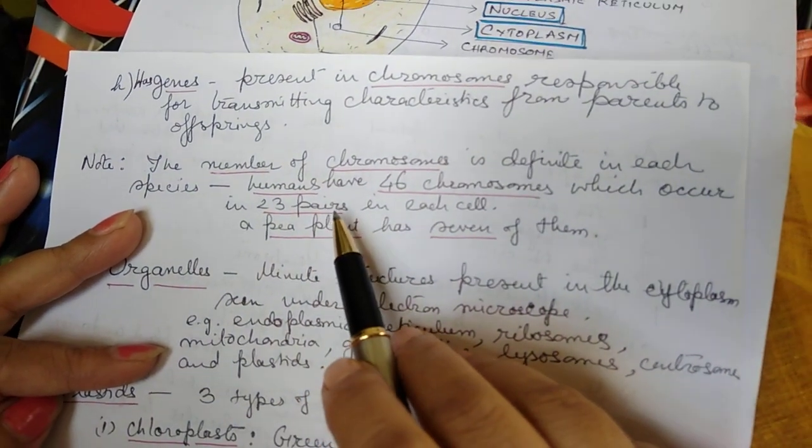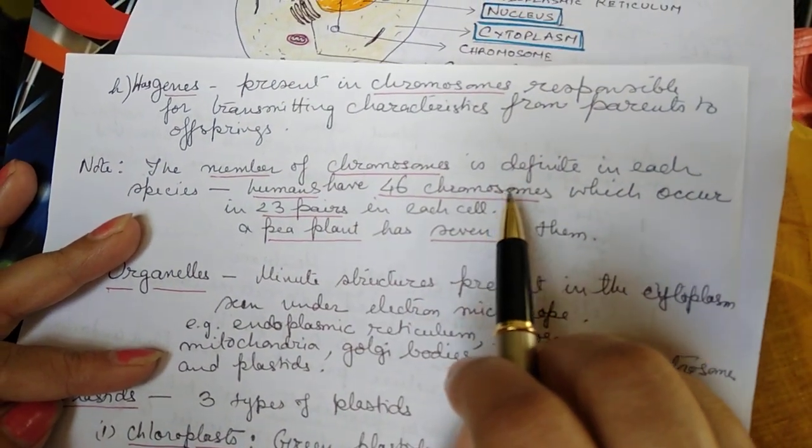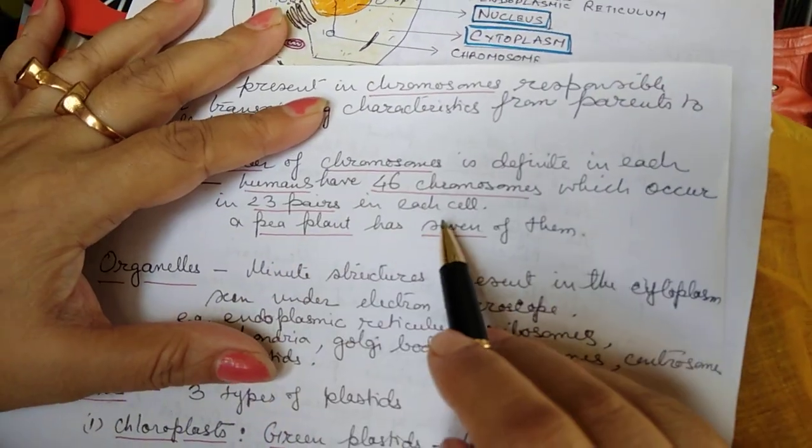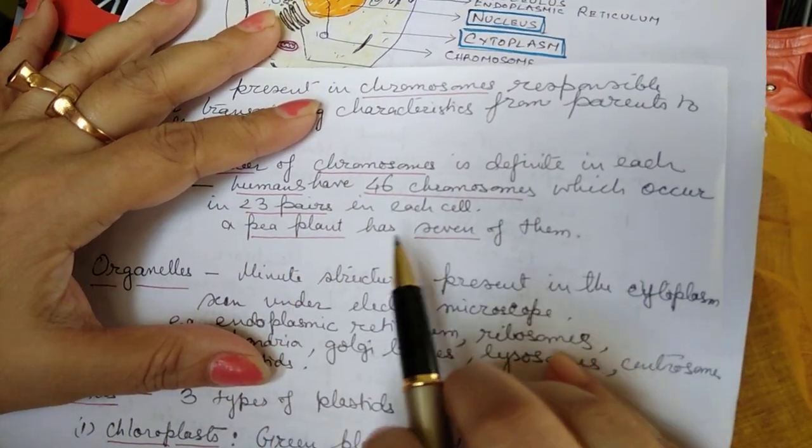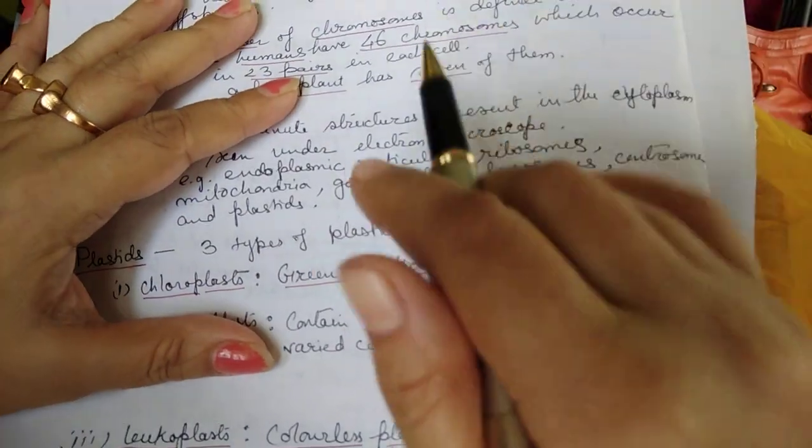The number of chromosomes is definite in each species. For example, in humans we have 46 chromosomes which occur in 23 pairs in each cell. In pea plants there are 7 of them.